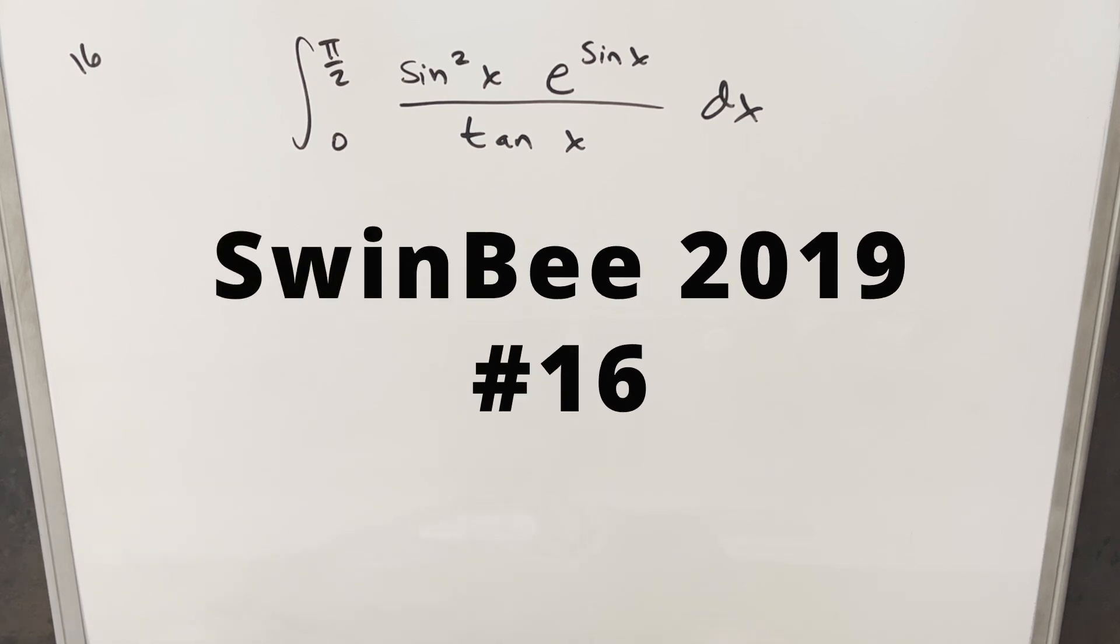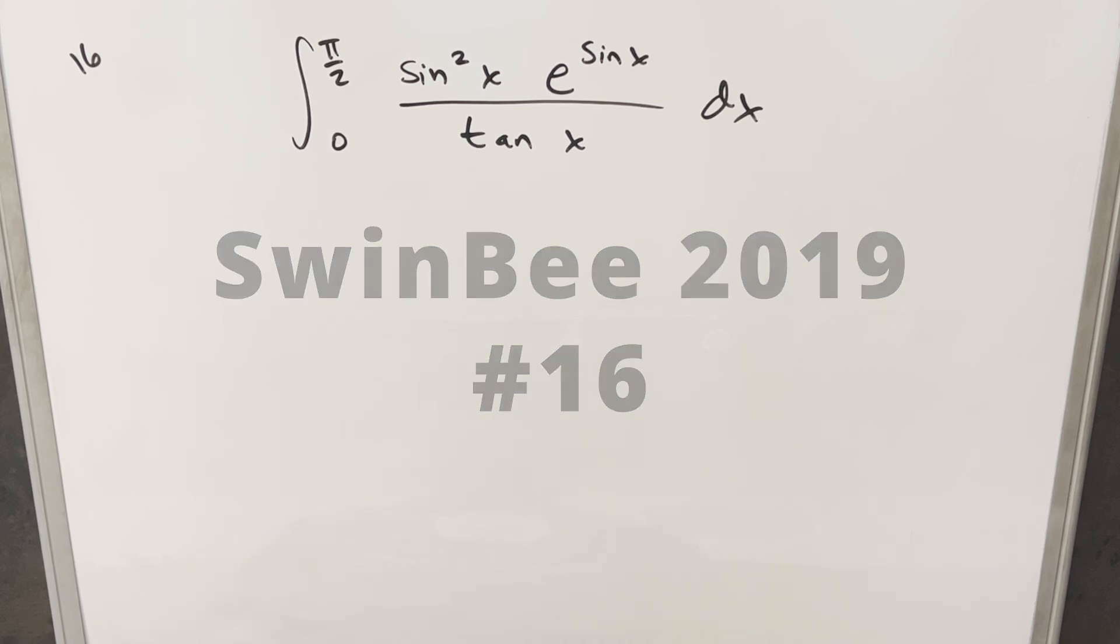Okay, we have here an integral today from the Swinby 2019 problem 16. We have the integral from 0 to pi over 2, sine squared x times e to the sine x over tan x dx.